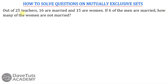Here is the first question from Jane Steven: out of 25 teachers, 16 are married and 15 are women. If six of the men are married, how many of the women are not married? This is a case of a question on mutually exclusive sets, in which even though we are having three conditions — men, women, and married people.